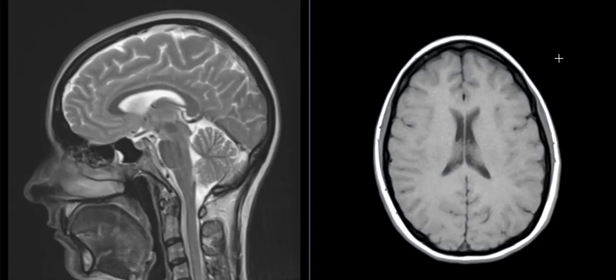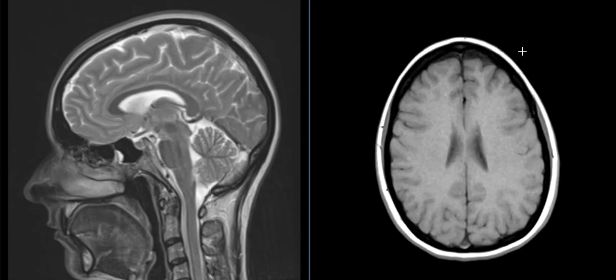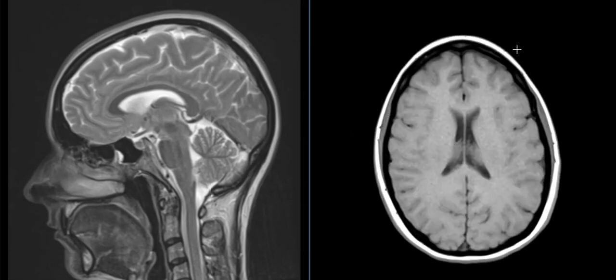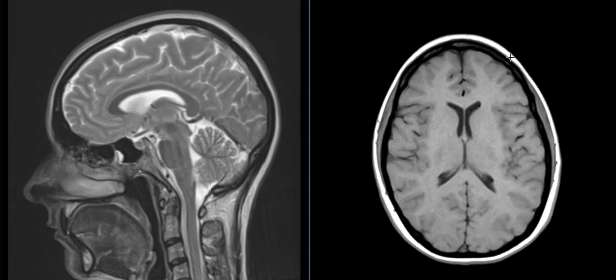Hello, this is Dr. Gay from First Sick MRI, and this is a patient who has normal-sized ventricles. I'm showing this to contrast the next patient who has abnormal ventricles, but this is what they should look like.